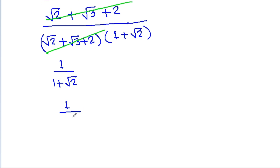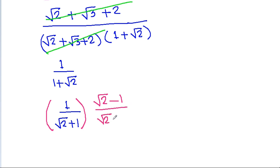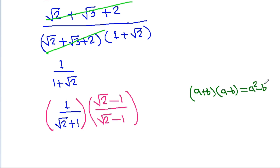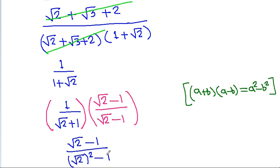So the expression is 1 divided by (√2 + 1). If we multiply by (√2 − 1) over (√2 − 1), we apply the identity (a + b)(a − b) = a² − b². This gives (√2 − 1) divided by ((√2)² − 1²).